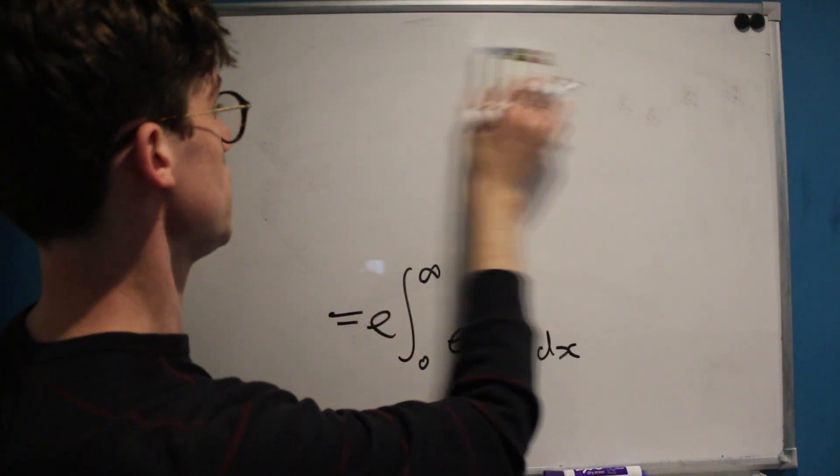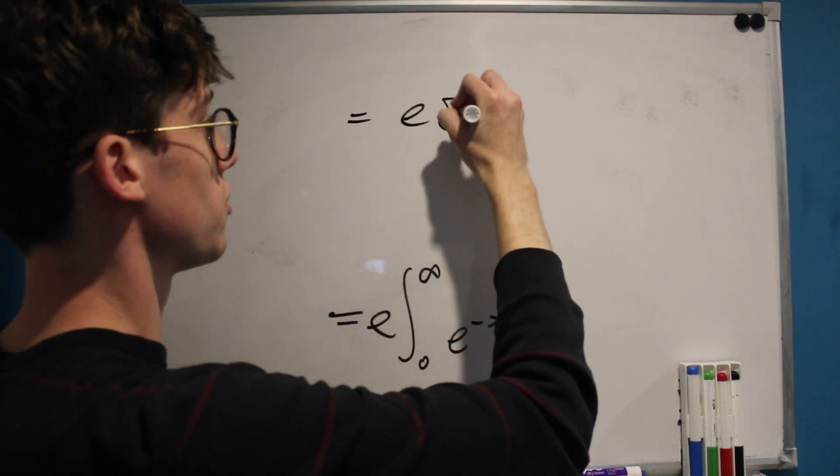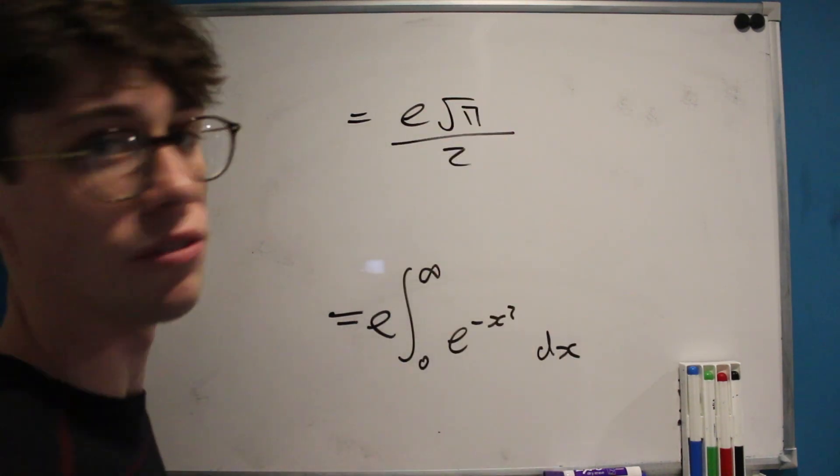and so if our bound starts from 0 instead we just half our result. And this means that our integral must be equal to e multiplied by the square root of pi all over 2.